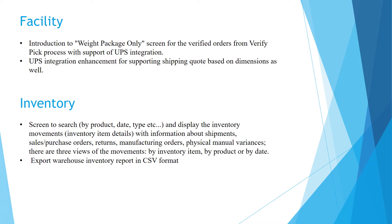Best integration enhancement for supporting shipping code based on dimensions as well. The inventory screen allows searching by product, date, type, or tag, and displays inventory movement, inventory item details, and information about shipments, sales, purchase orders, returns, manufacturing orders, and physical manual variances. There are views of inventory item movement by product or by date, and users can export warehouse inventory reports in CSV format.